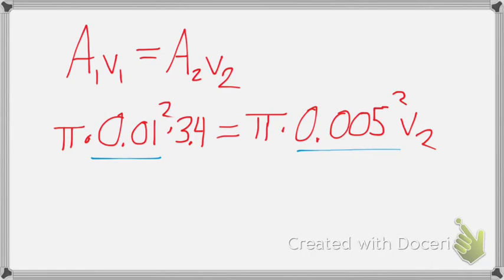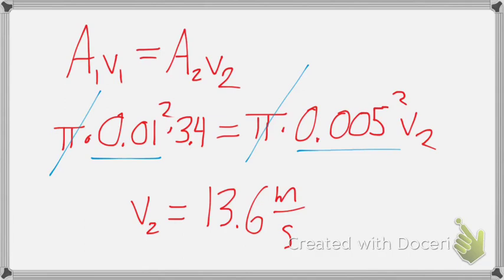Now, all I've got to do is solve for V₂. Actually, π cancels again. Beautiful. All I've got to do is solve for V₂ algebraically, and it comes out to 13.6 meters per second.